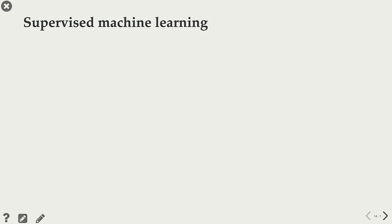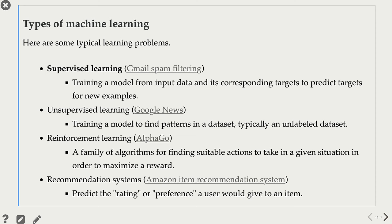Let's talk a little bit about supervised machine learning. There are different types of machine learning depending upon what kind of problem you are trying to solve and what kind of data is available to you. Some typical learning problems include supervised learning, unsupervised learning, reinforcement learning, and recommender systems.